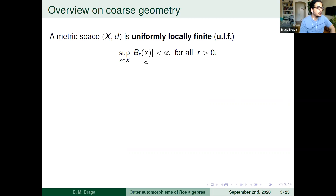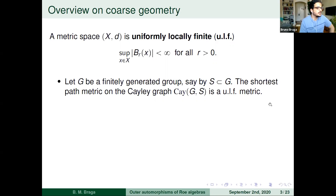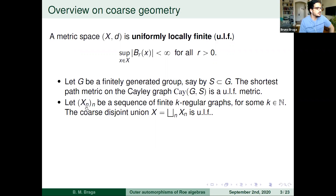We restrict to a subclass of metric spaces: uniformly locally finite (ULF) metric spaces, which many people call metric spaces with bounded geometry. Not only do balls of finite radius have finitely many elements, but there is an upper bound that depends only on the radius, not the center. Examples: if you have a finitely generated group generated by a finite set S, the Cayley graph with shortest path metric is ULF. Also, a sequence of K-regular finite graphs (K independent of n) yields a ULF space as their disjoint union.